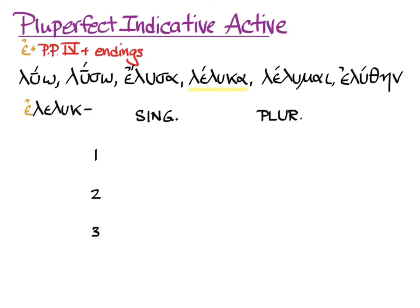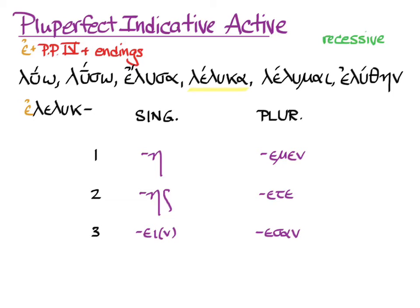Here's our chart for person and number, and here are the endings of the singular for the Pluperfect. The third singular can have a nu movable. In the plural, the accent is recessive.